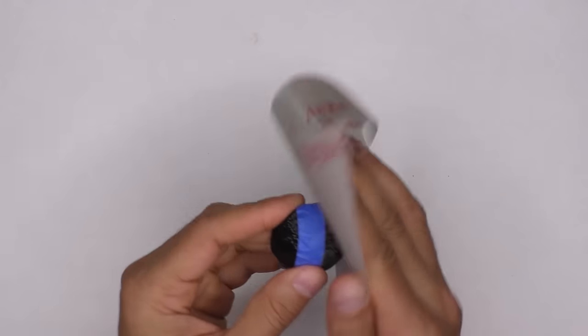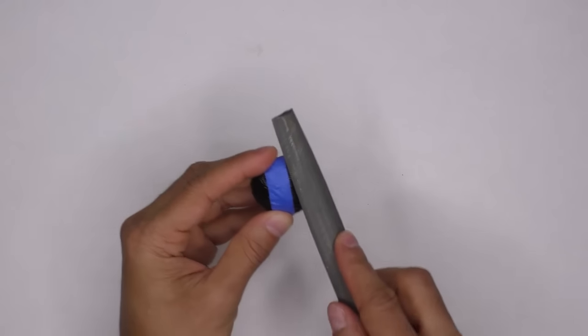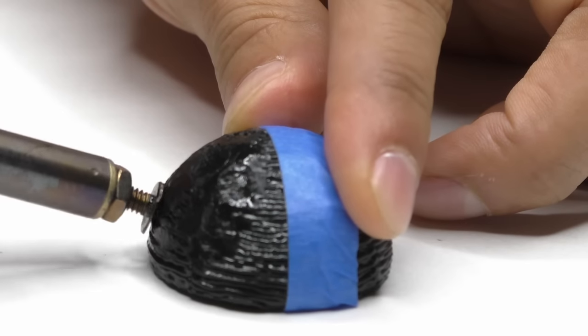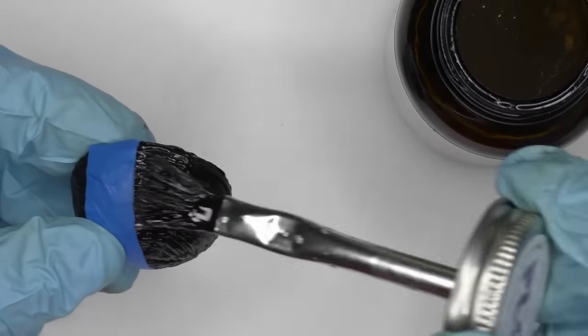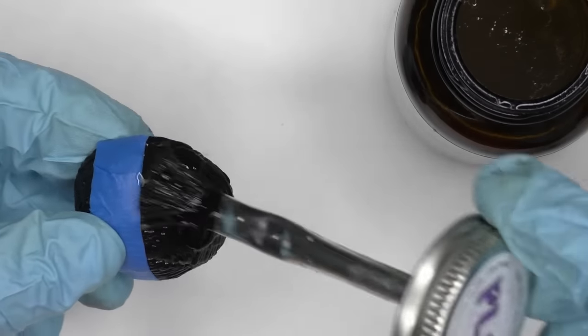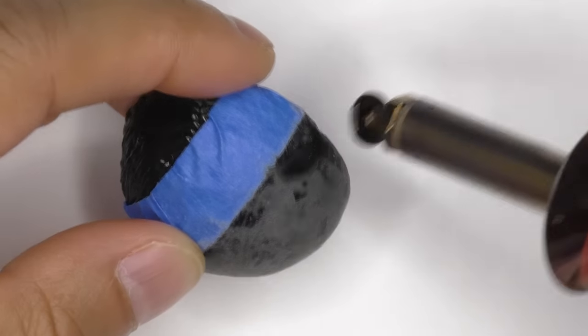The different methods I'm going to be testing are sanding and filing, using a wood-burning tool, using a liquid smoother called 3D Gloop, and combinations of all three methods.